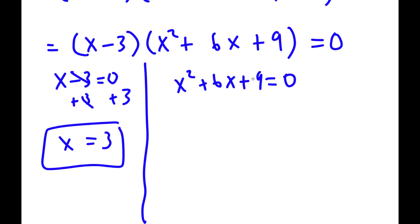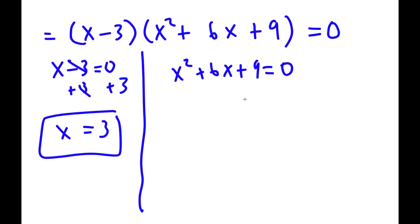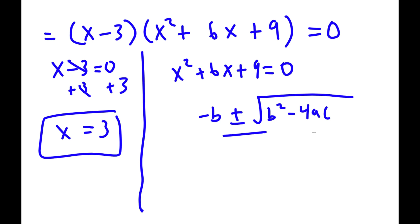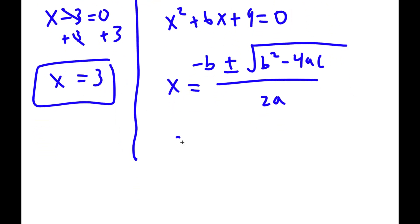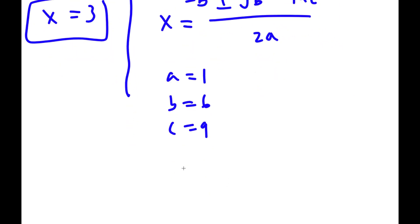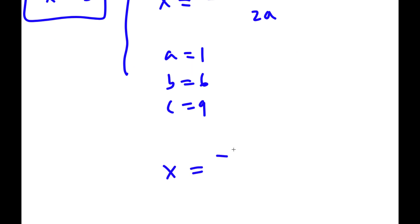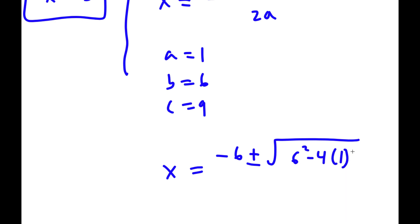For x squared plus 6x plus 9 equals 0, I have to use the quadratic formula to solve this. The quadratic formula is negative b plus or minus the square root of b squared minus 4ac, all over 2a. In this case, a is equal to 1, b is equal to 6, and c is equal to 9. So now I have x is equal to negative 6 plus or minus the square root of 6 squared minus 4 times 1 times 9, all over 2a.